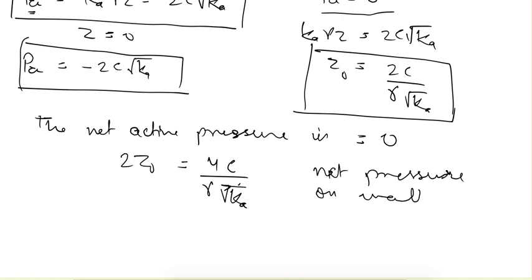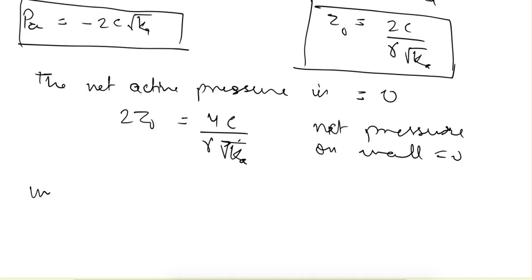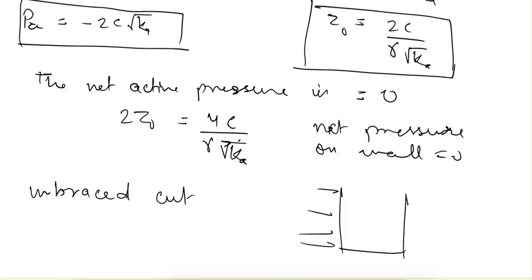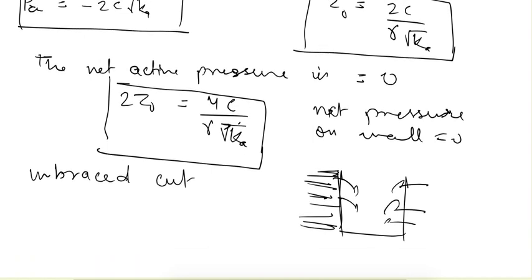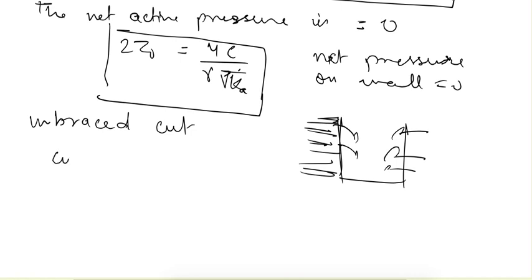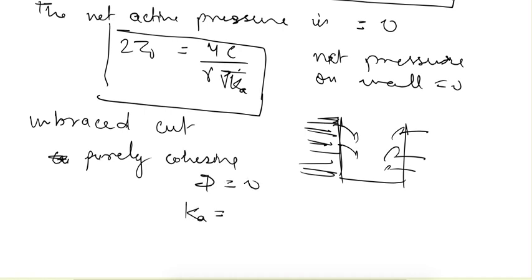The net pressure on the wall is zero up to this depth, so we can make an unbraced cut in this soil. The soil can sustain itself and will not fall because it is in tension in this zone. This is a common exam question: the depth up to which an unbraced cut can be made is 4c/(γ·√Ka). For purely cohesive soil where φ = 0, Ka = 1, so this depth h0 = 4c/γ.